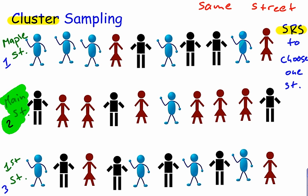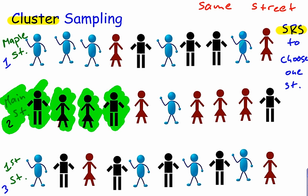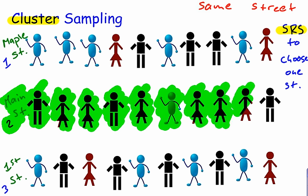So I would interview all of the people that live on Main Street. And hopefully every single person on Main Street would be willing to do the interview. But I would interview everybody on Main Street because Main Street was the cluster that got chosen using simple random sampling.